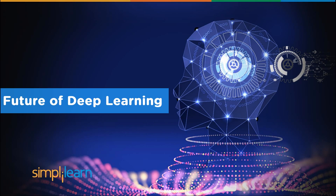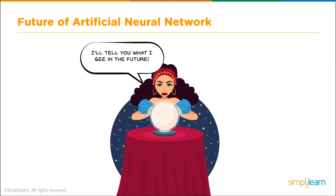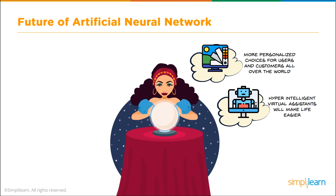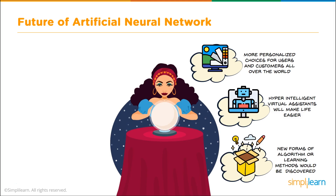Let's go a step further and look at the future of deep learning. More personalized choices for users and customers all over the world — for example, taking a picture of a couch or clothing item and having the system find similar products. Hyper-intelligent virtual assistants will make life easier; Google Assistant and Siri are slowly evolving and can now even pre-write email responses. New forms of algorithms for learning methods will continue to be discovered. We're still in the infant stage of artificial intelligence and neural networks — it's a wonderful time to jump in.